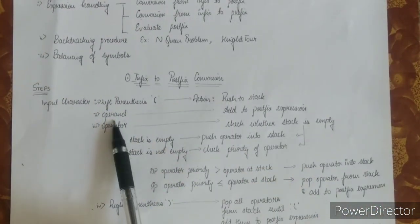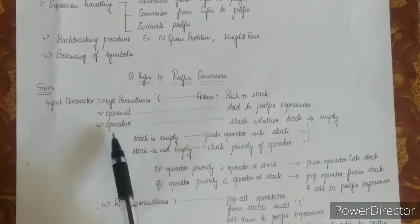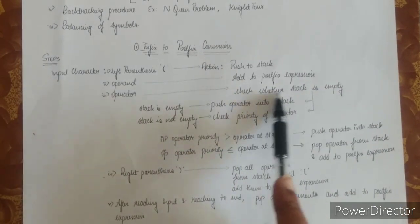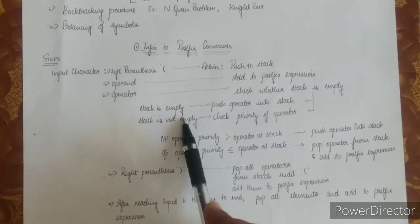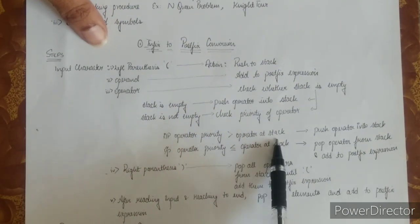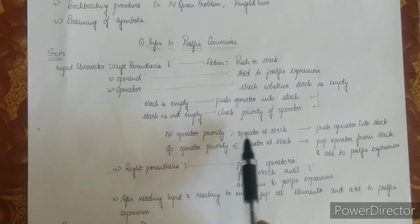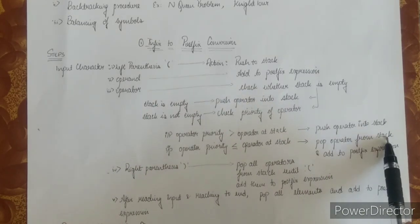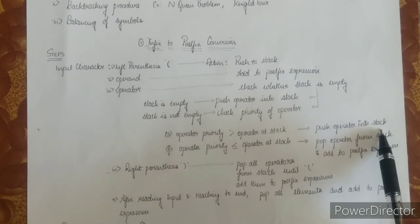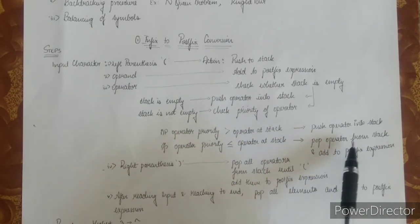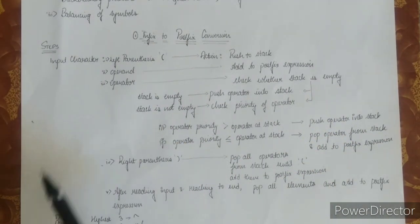If the input character is an operand — such as A, B, C, D — then the action is to add it to the postfix expression. If the input character is an operator, check whether the stack is empty. If the stack is empty, push the operator into the stack. If the stack is not empty, check the priority of the input operator versus the operator already in the stack. If the input operator's priority is greater than the operator at the top of the stack, push the input operator into the stack. Otherwise, if the input operator's priority is less than or equal to the operator at the stack, pop the operator from the stack and add it to the postfix expression.